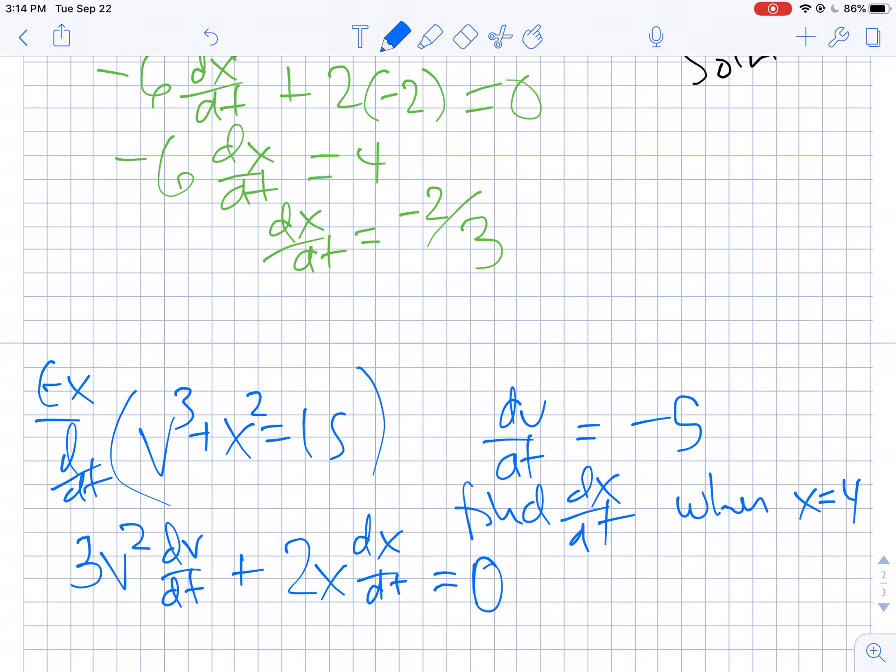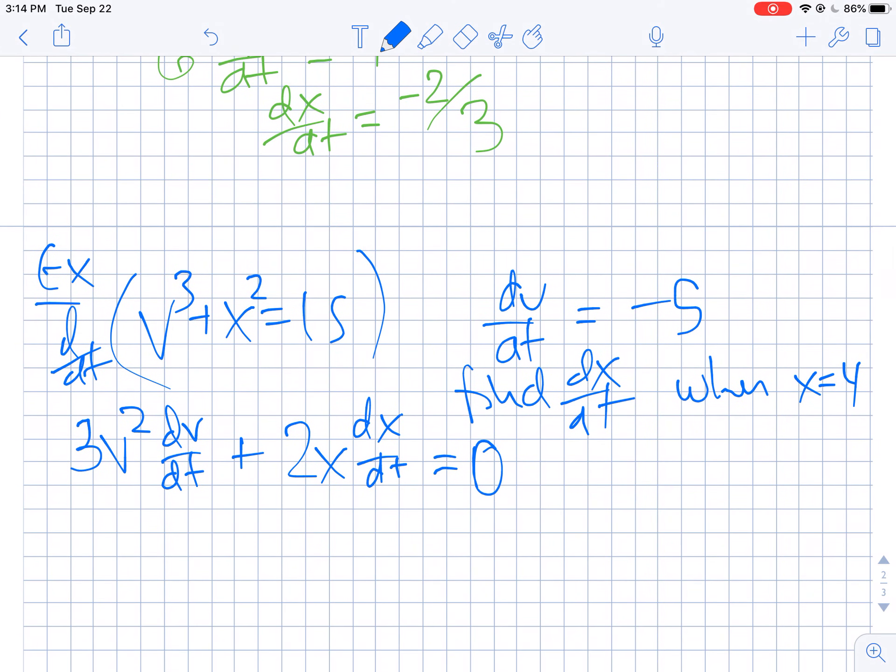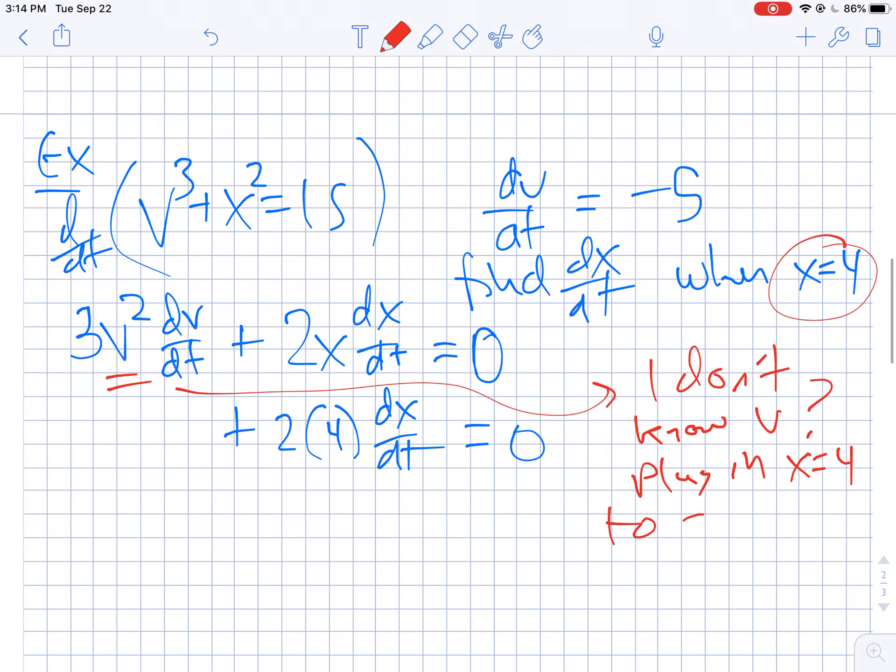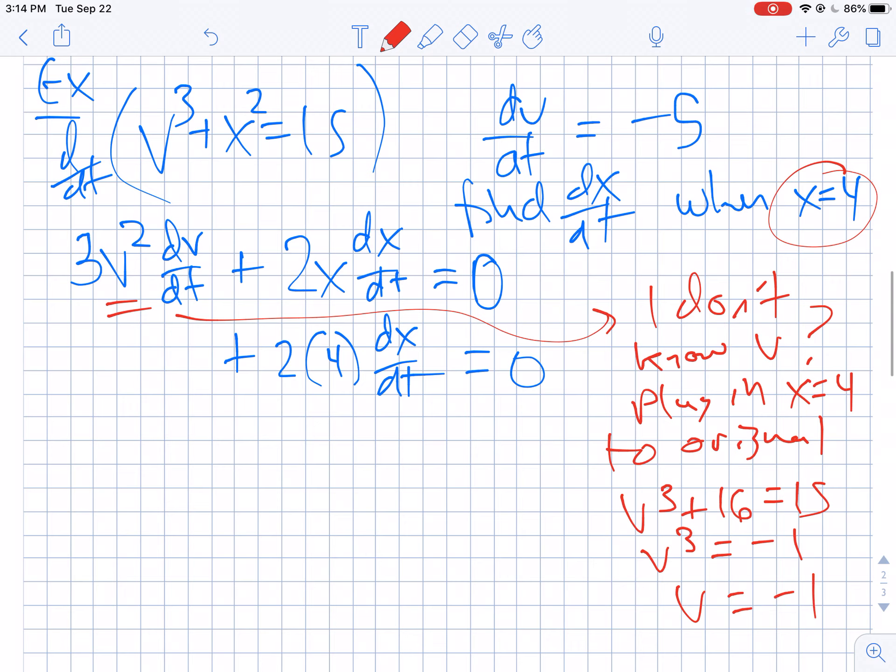Let's plug in what we know. We know x is 4, so that's 2(4)(dx/dt) we're trying to find. We don't know v. That's kind of a little bit of an issue. This is something that's going to come up. We don't know v, but I can find v by plugging into the original equation. I can plug in that x = 4 to the original. So I'll get v³ + 16 = 15, which gives me v³ = -1. The cube root of -1 is still -1.